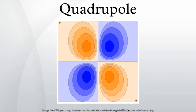A quadrupole or quadrapole is one of a sequence of configurations of things like electric charge or current, or gravitational mass that can exist in ideal form, but it is usually just part of a multipole expansion of a more complex structure reflecting various orders of complexity.